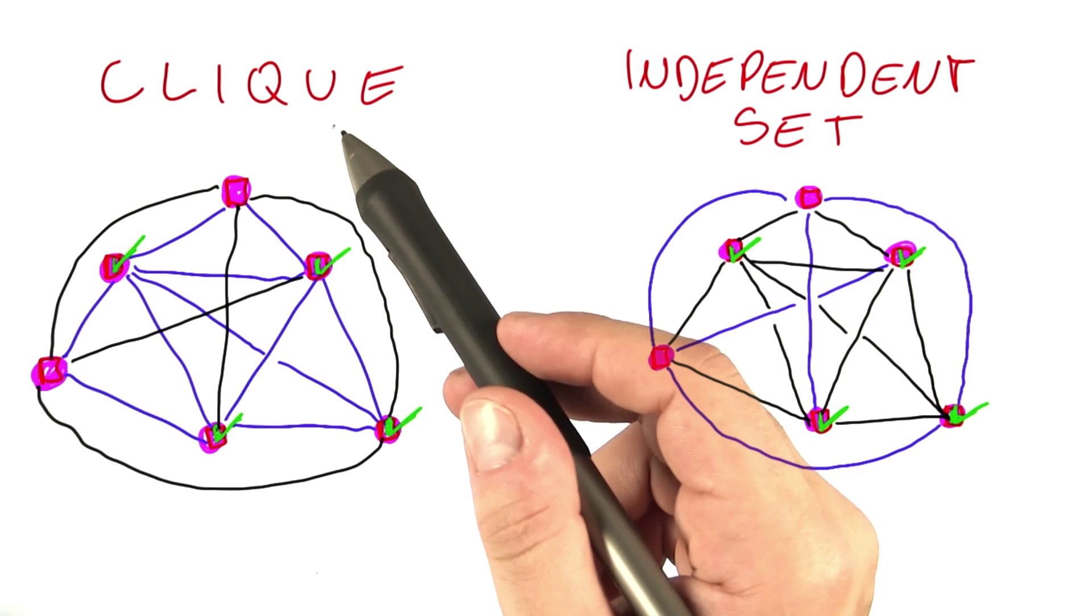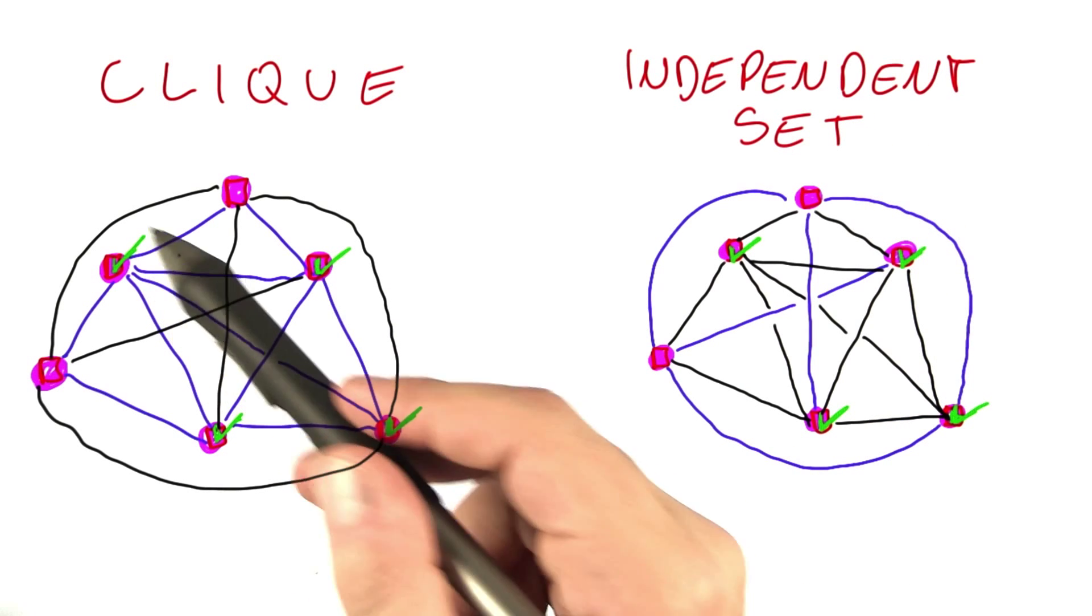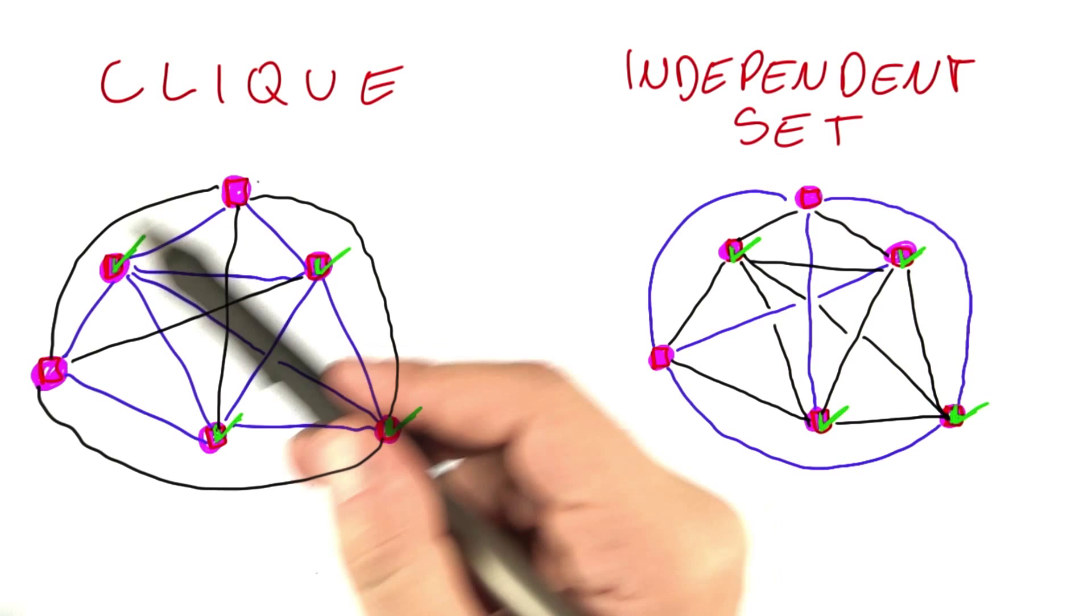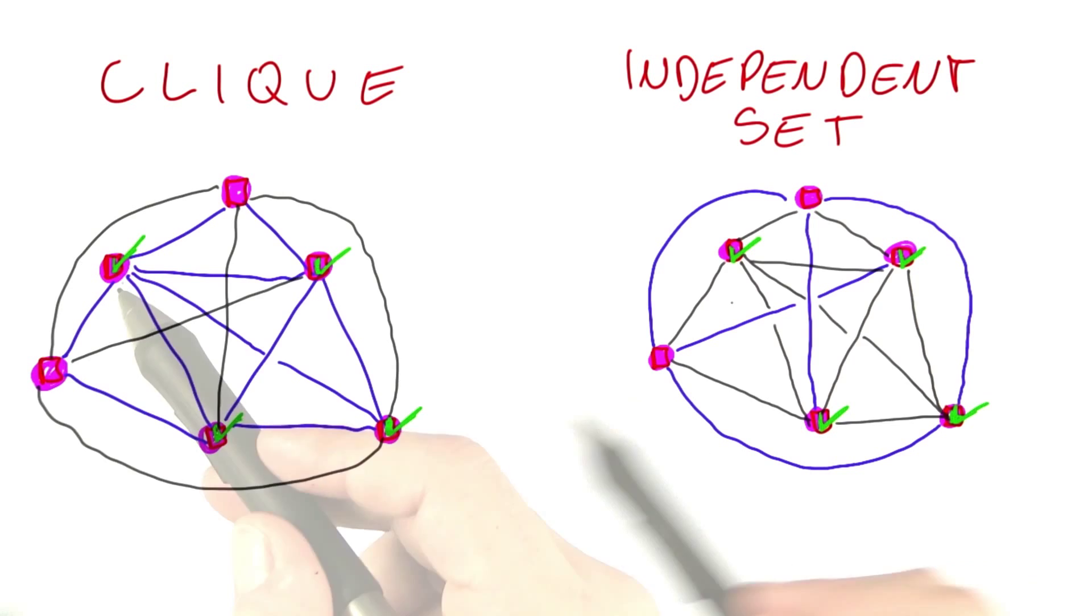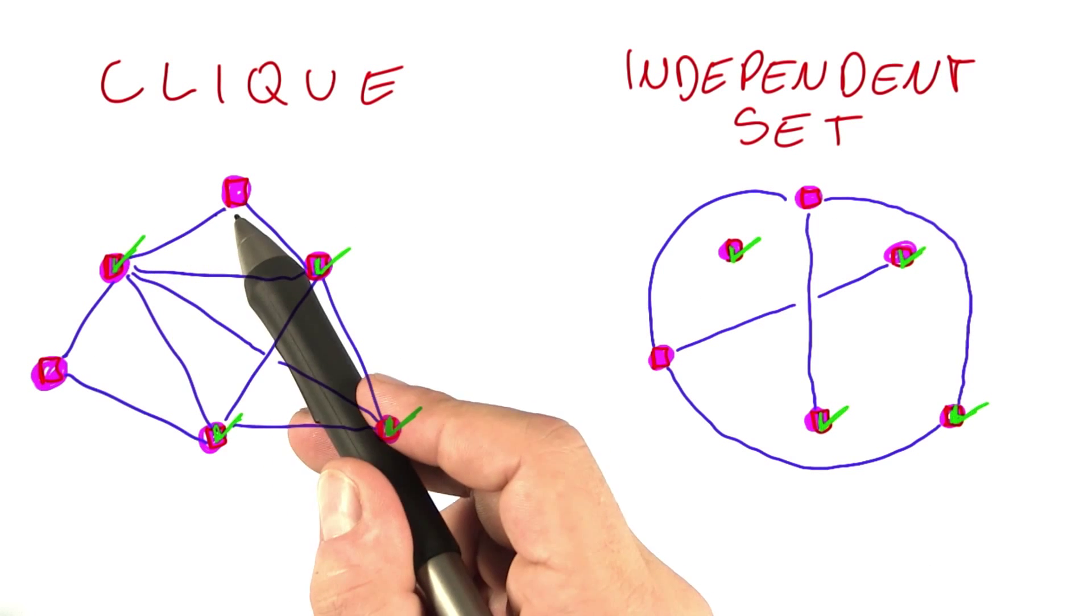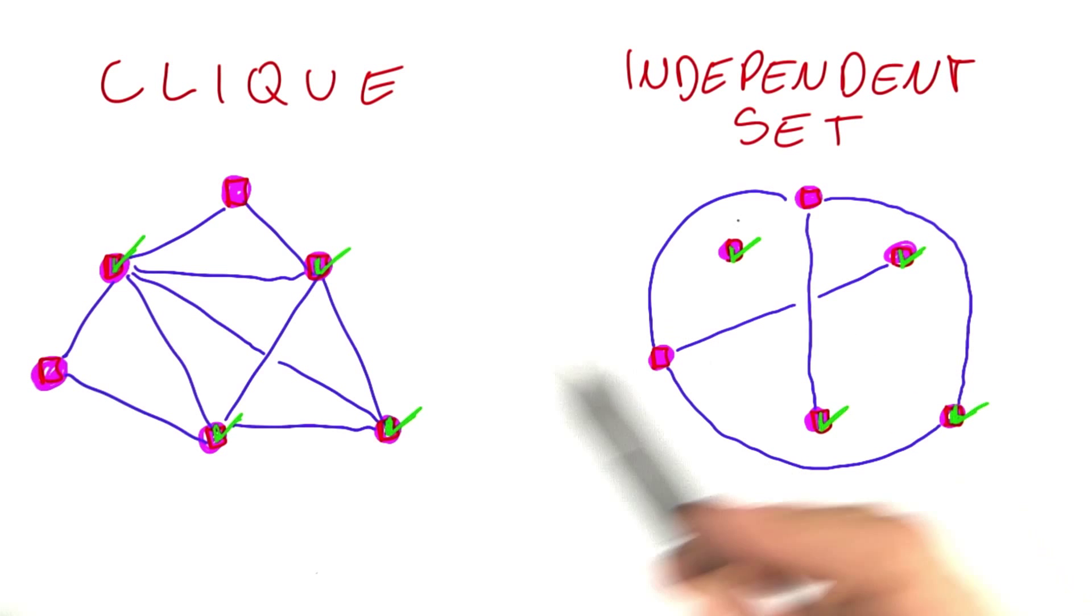And this is exactly the connection between clique and independent set. If you have solved clique on a given graph, you take another graph where you draw exactly the opposite edges. Every pair of vertices that is connected by an edge in this network is not connected over here and vice versa.